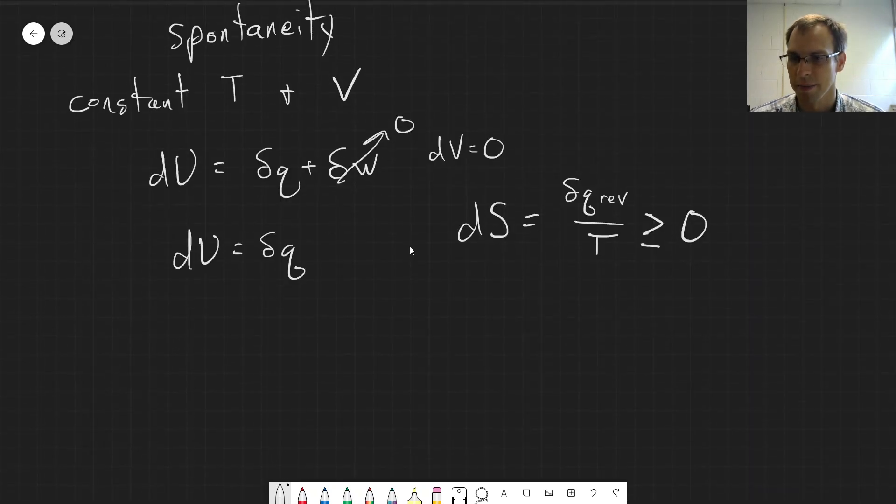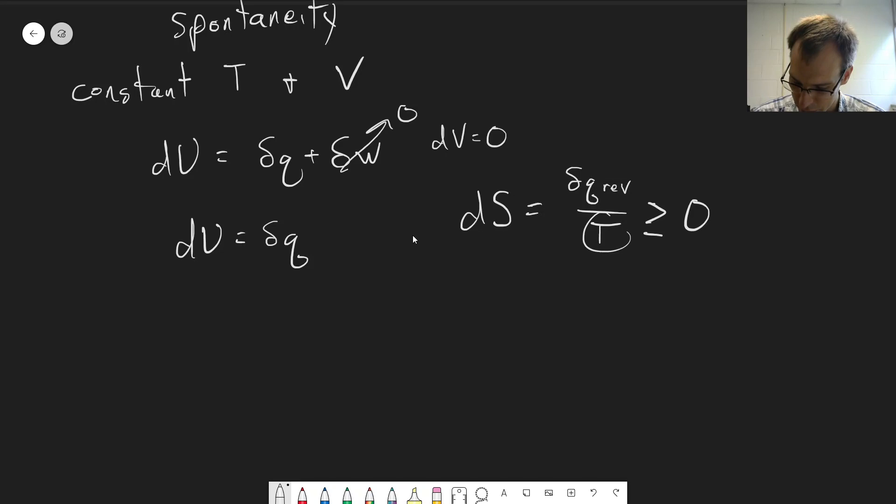And so we can combine these here. If we move the T over here, we can say that TdS has to be greater than or equal to dq, because dq could be either the reversible case or the irreversible case.